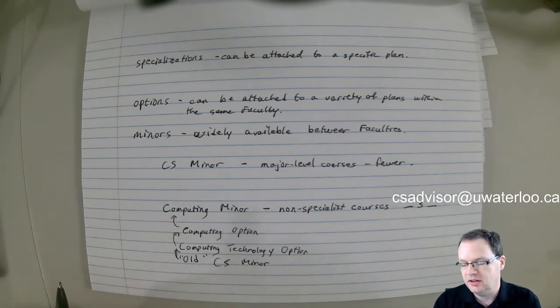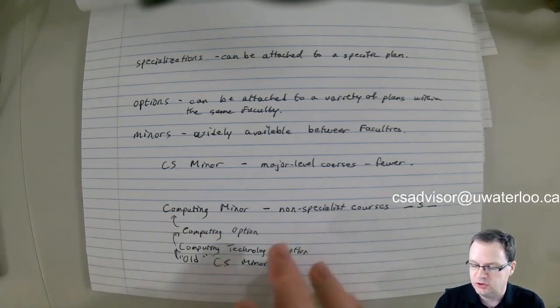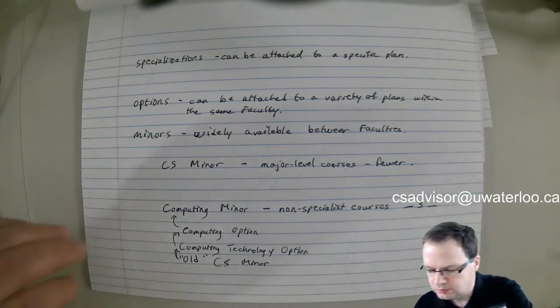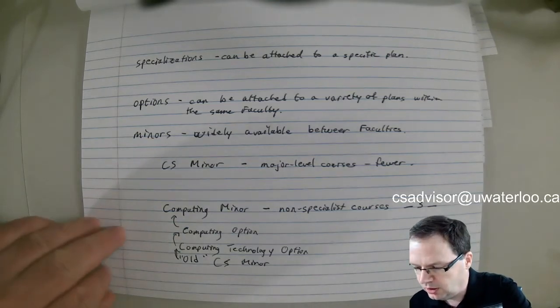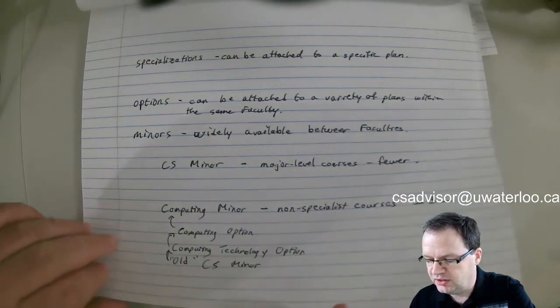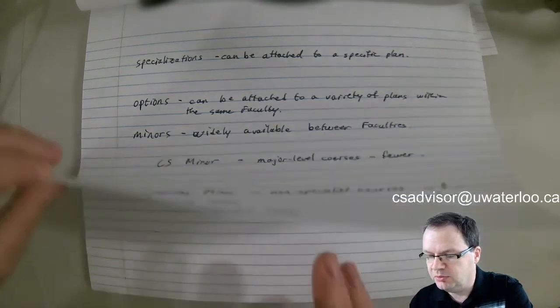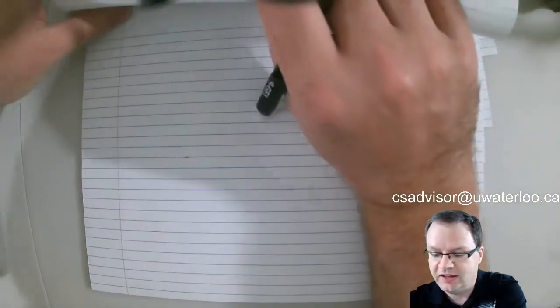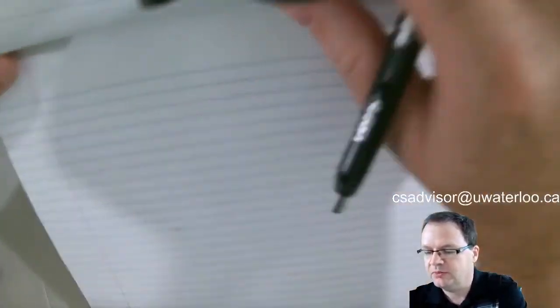The computing minor does not have the competitive entry process that the CS minor has, so it is still widely available. If that is what you're looking to do, we can probably help you. That's the difference between the CS minor and the computing minor, and why we have two minors and why they have to be called minors.